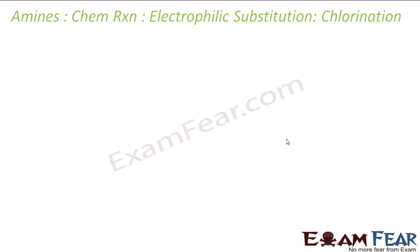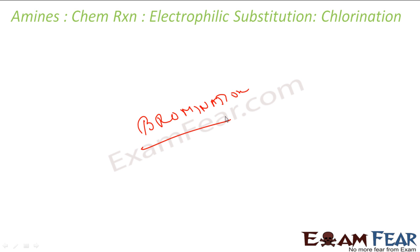Let's talk about chlorination. Chlorination is similar to bromination — exactly the same mechanism applies. Here also you can use acetic anhydride to poison it and get the major product as para-chloroaniline.